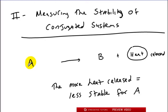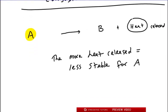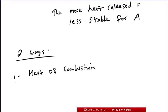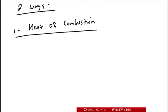So that's how we figure out how stable or unstable something is - we just measure the heat that's being released. Now remember, there are two ways that we can do this. The first one is heat of combustion, and this is useful when you have molecules that are different, but usually we're doing a comparison between two different molecules.